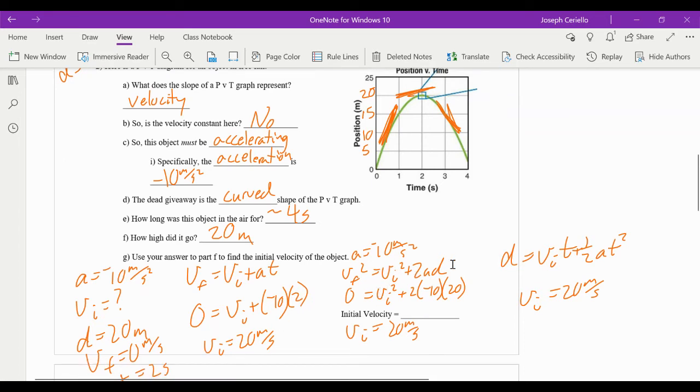So that would be 20 meters per second. We could also use the equation VF² = VI² + 2AD, where VF at the apex is zero equals VI² + 2AD. Okay, we know that D is the max height, and we can find the initial 20. You could also use this equation here: D = V initial times time + 1/2 AT². D is 20, that's how high it went. T is the time to the apex because that's when it goes 20. So that would be 2. This would be negative 10, this would be 2 squared, you get 20 as well. So there's three different ways to do this one. But I did ask you to use your answer for part F here, so you should have used one of these two methods.